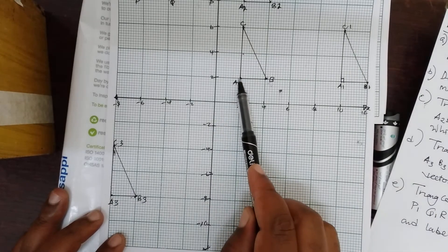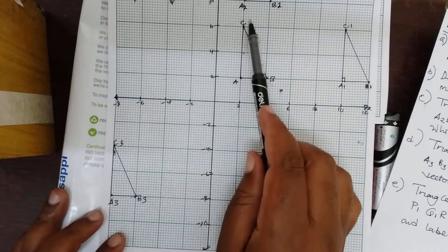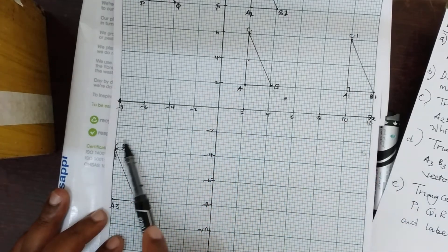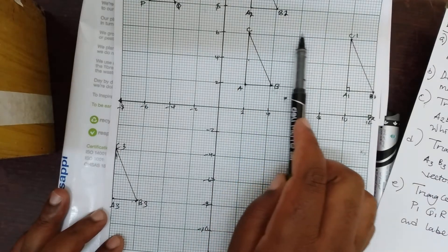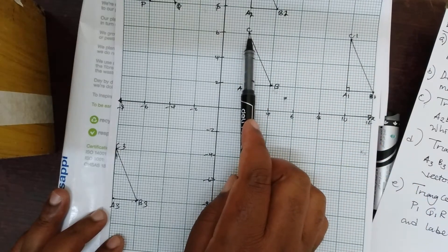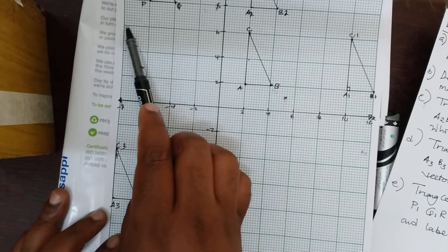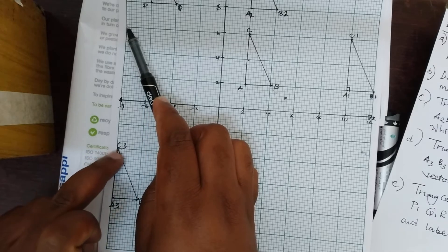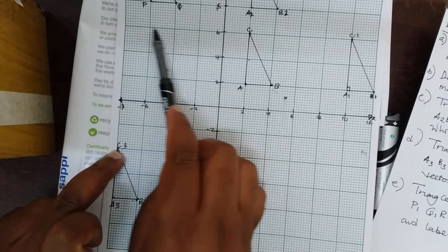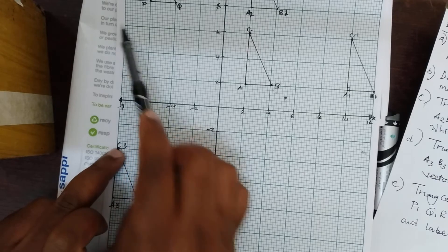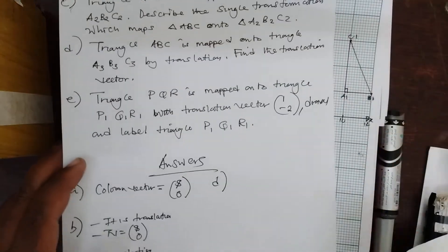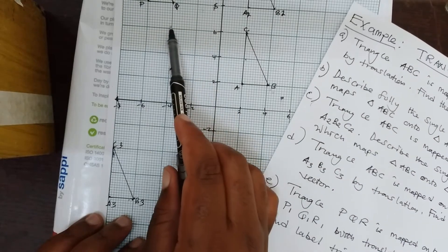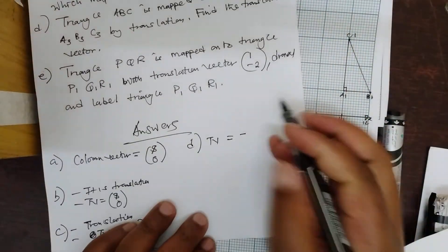C is here. You must move either to the left or to the right until you meet C3. If you go to the right you will not find it, so you have to move to the left: 2, 4, 6, 8, 10. At this point, 10 steps to the left coincide with C3. Because you are going to the left-hand side, the value of x will be negative — the translation vector shall be negative 10.